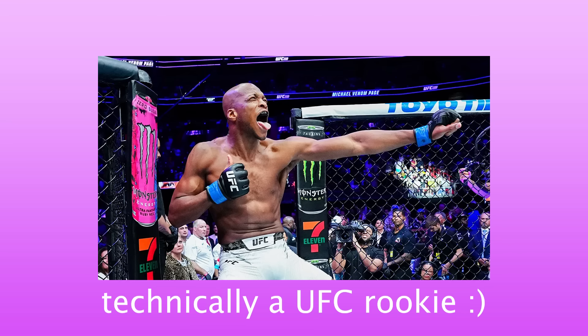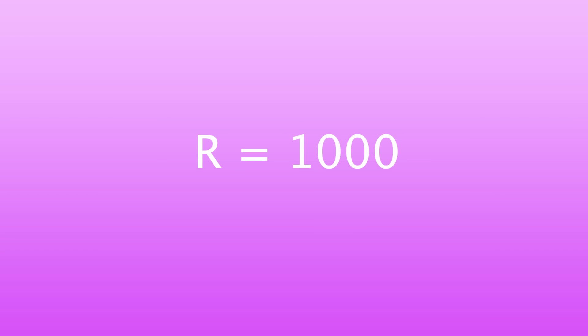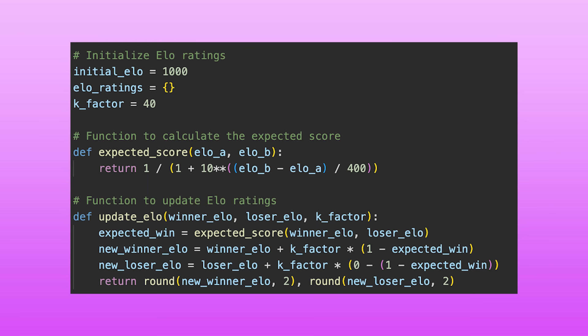For initial ratings, fighters who are fighting in the UFC for the very first time will be given a rating of 1,000. It's just a nice number, it doesn't really matter too much. And yeah, the math is sorted — we can add it to our code, understand what's happening, and move on.